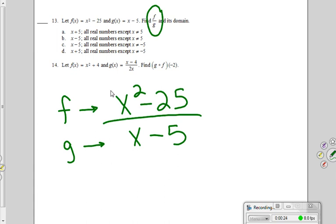What value for x would create 0 in the denominator? 5. So the domain is x is not allowed to be 5. That would make us divide by 0. So that's the domain part.